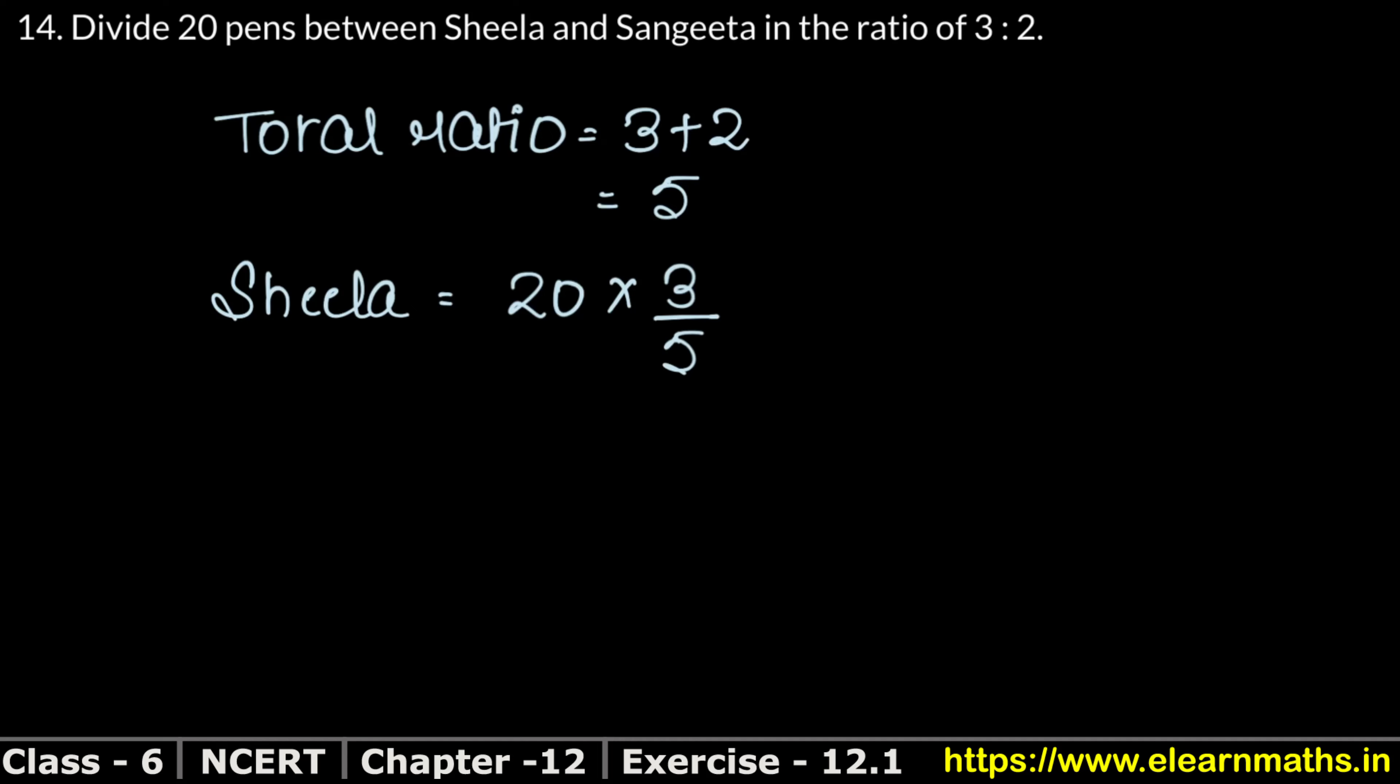If we have 5 rupees and divide in Sheela and Sangeeta's ratio 3:2, Sheela gets 3 rupees and Sangeeta gets 2 rupees. This means for 20 pens: 20 into Sheela's ratio 3 upon total ratio 5. Dividing by the same number from above, 5 ones are 5, 5 fours are 20. So 4 into 3 is 12. Sheela gets 12 pens.